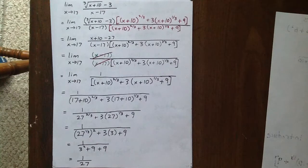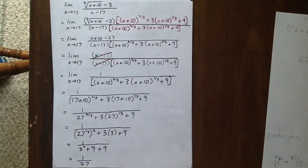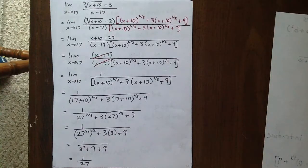Unfortunately, when we substitute the x value of 17 in, we get the indeterminate form of 0 over 0.